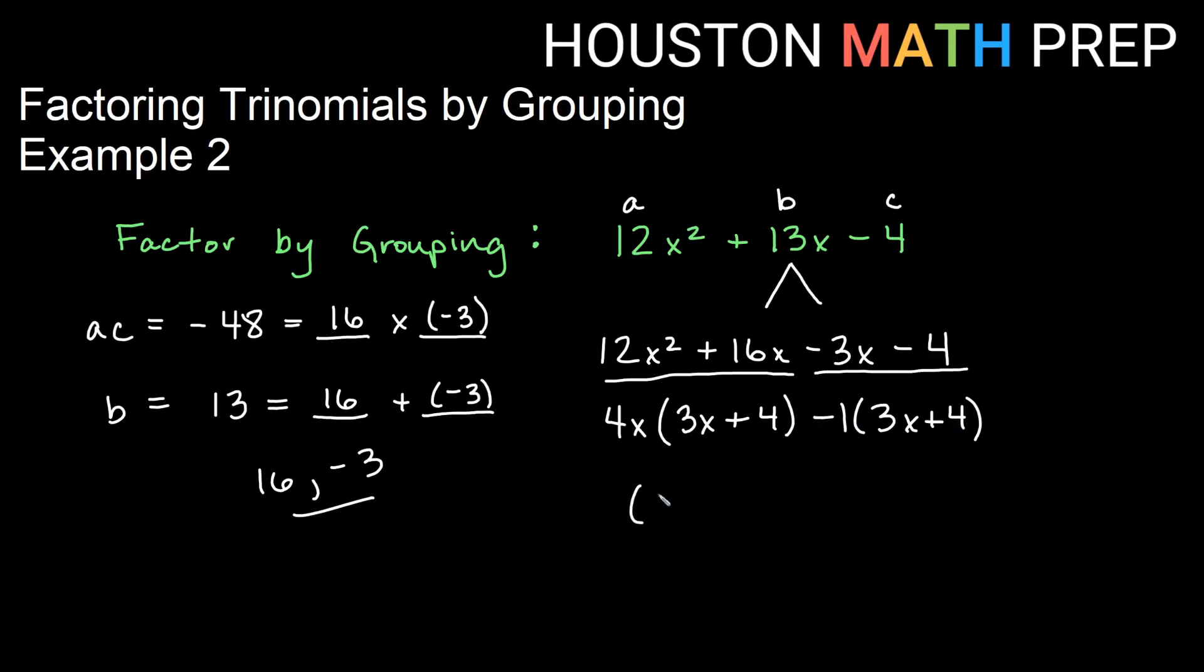Okay so we have finished we have 3x plus 4 is definitely a factor here. Remember the outsides in front of the 3x plus 4 are our other factor. So we have 4x minus 1 as our other factor. That's our answer factoring by grouping that's example 2. We've got a couple more to go. Hang in there. Keep factoring by grouping. We'll see you in the next video.